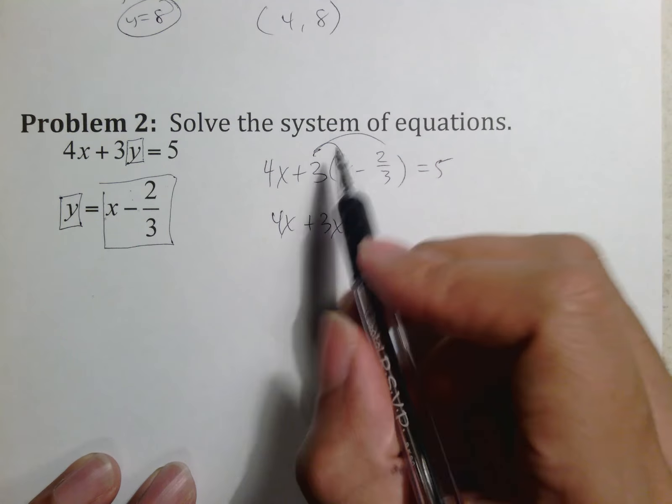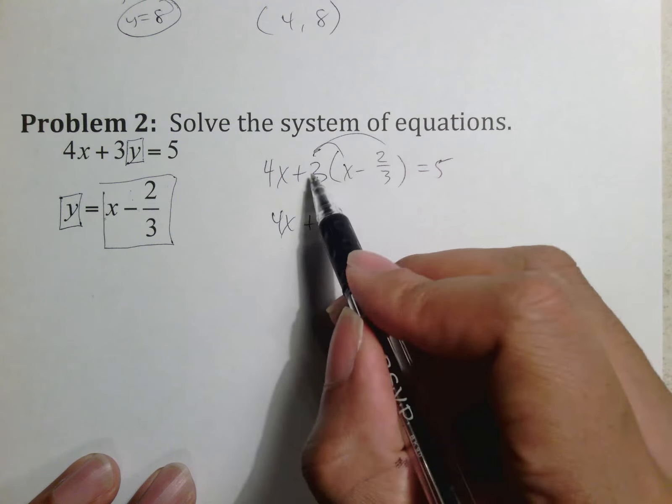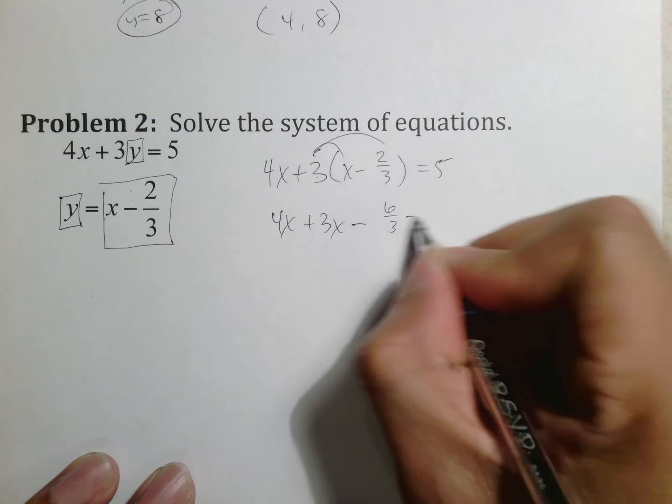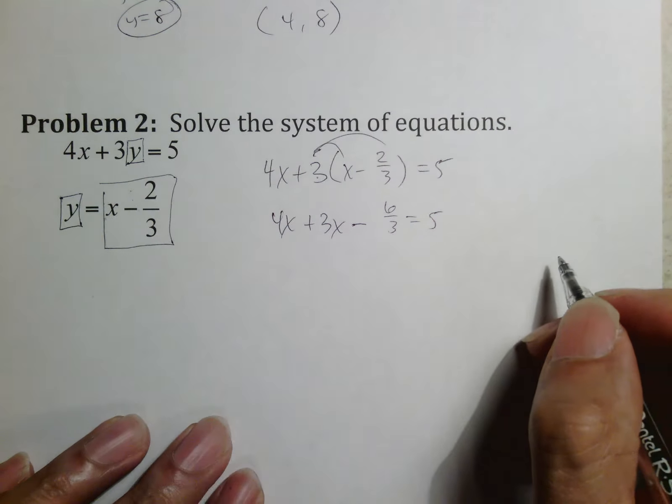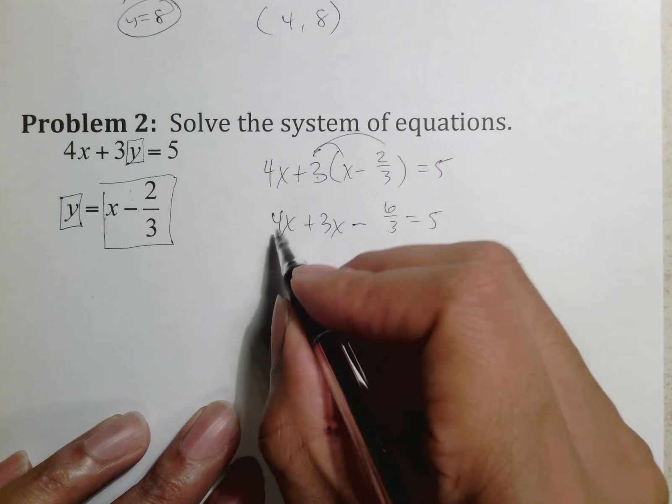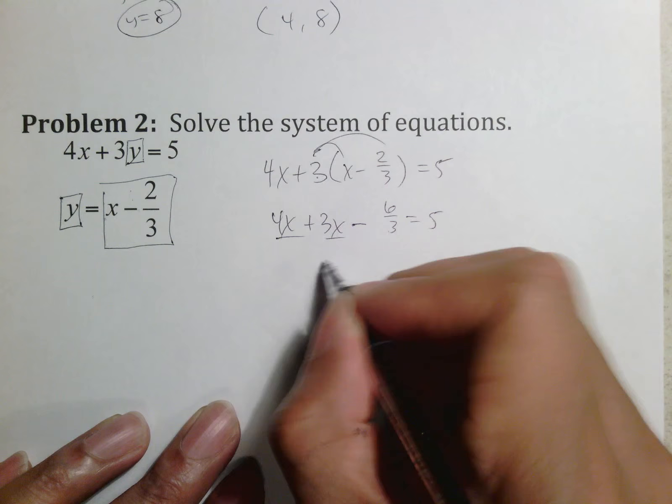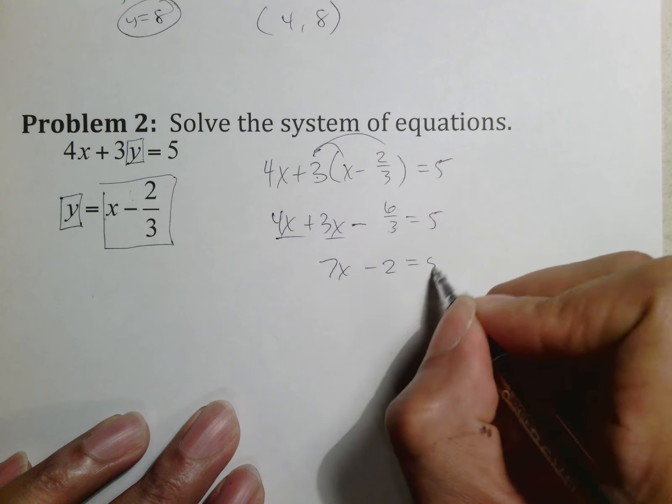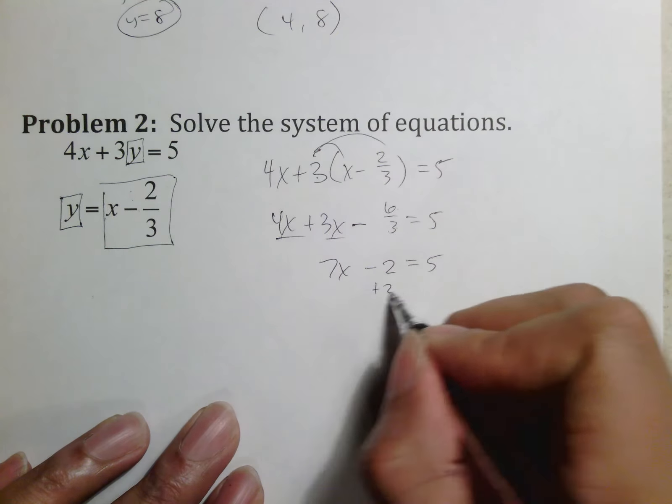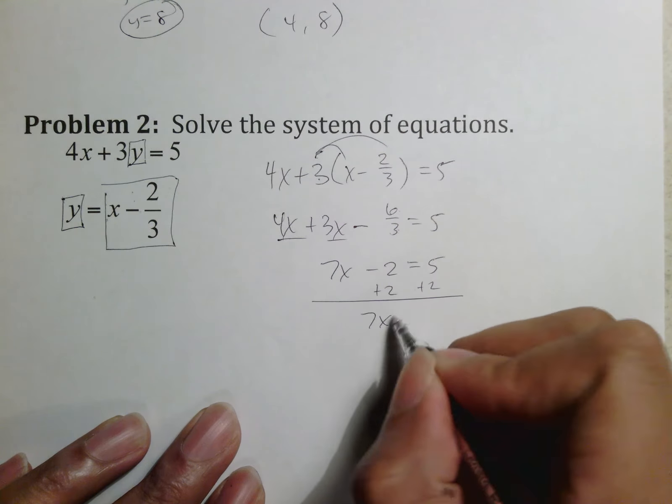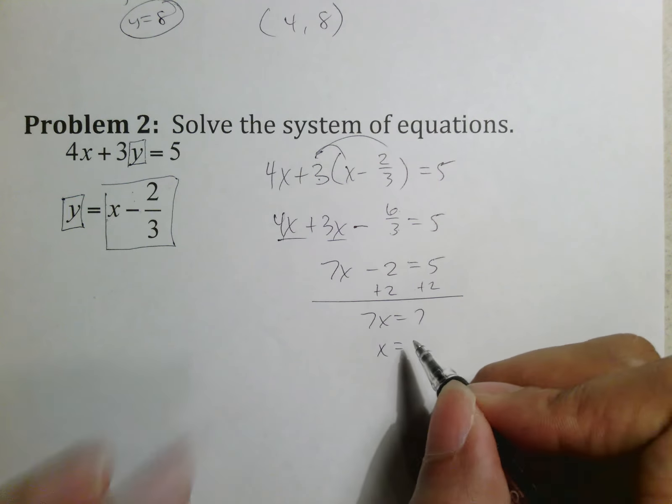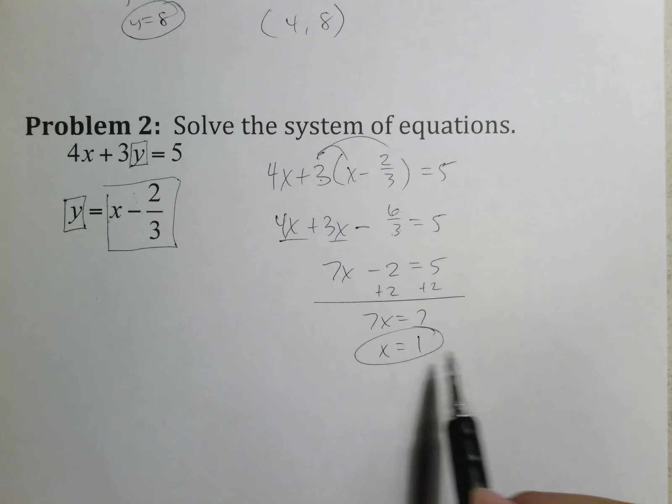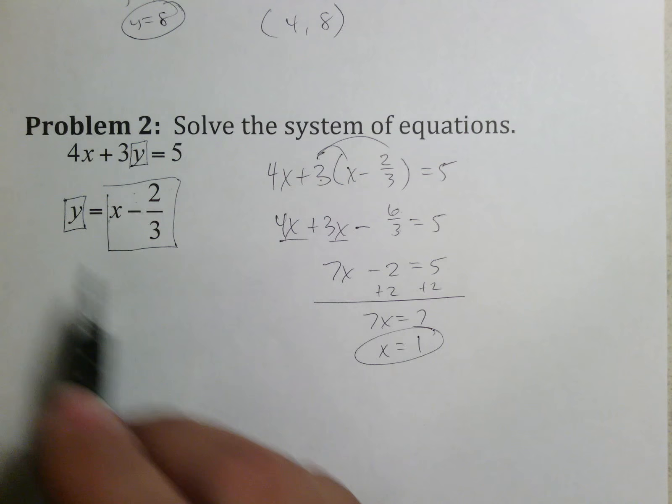Now I have to distribute. 4x is easy, plus 3x is easy, but I have to remember that when I take a number times a fraction, the number gets multiplied by the top. So it should be minus 6/3 equals 5. This can be reduced—both of these things can happen. This can turn into 7x and 6 divided by 3 is 2. Add 2 to both sides, getting 7x equals 7, so x equals 1.